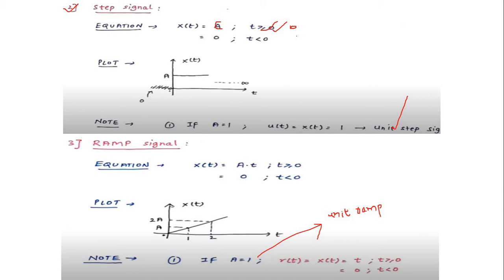The third basic signal is the ramp signal. Its mathematical function is x(t) = At for t ≥ 0, and 0 for negative values of t. At t=0, x(t) = 0; at t=1, x(t) = A. As t changes, x(t) changes linearly, so the ramp signal is a linear signal. If A equals 1, it is called the unit ramp signal.